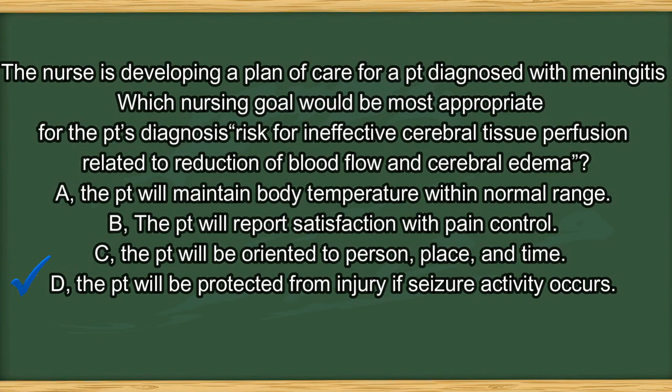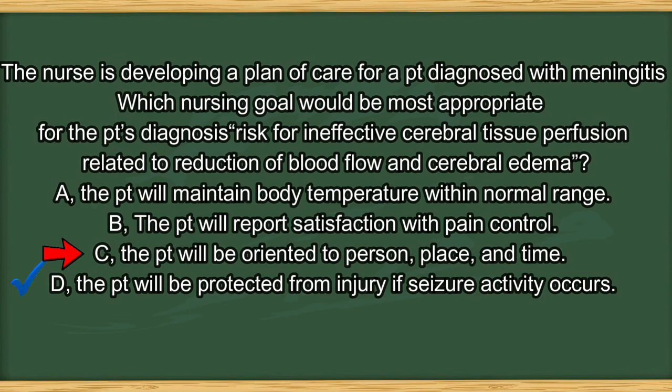The answer is D. Because the patient with meningitis has a problem of altered cerebral tissue perfusion, which puts the patient at risk for seizure activity. Therefore, the patient should be on seizure precautions. Option A would be a goal for a patient with high fever. Option B would be a goal for a patient with pain. And option C would be a goal for a patient with delirium.